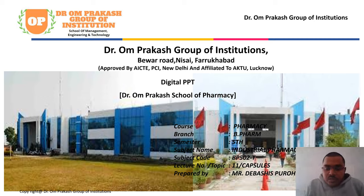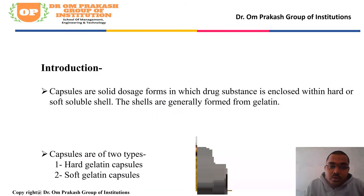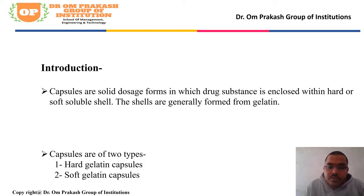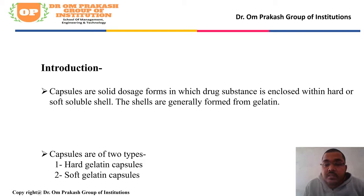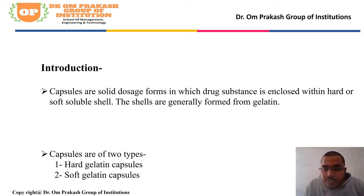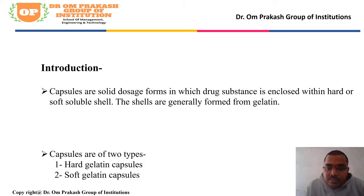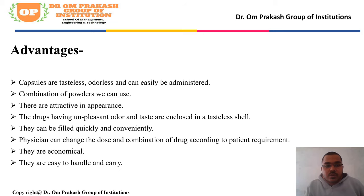Good morning everyone. Today we are going to read about the topic capsules, which is in the second unit of industrial pharmacy. Capsules are solid dosage forms in which the drug substance is enclosed within a hard or soft soluble shell. The shells are generally formed from gelatin, and there are two types: hard gelatin capsules and soft gelatin capsules.